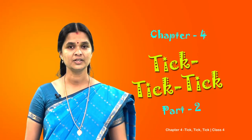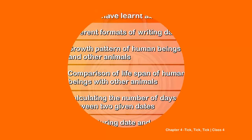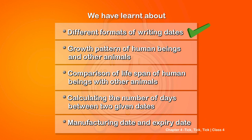We have learnt so many things today. Let us check and revise. We have learnt about different formats of writing dates, the growth pattern of human beings and other animals, and we compared the lifespan of human beings with other animals. We also calculated the number of days between two given dates, and discussed the importance of manufacturing date and expiry date.